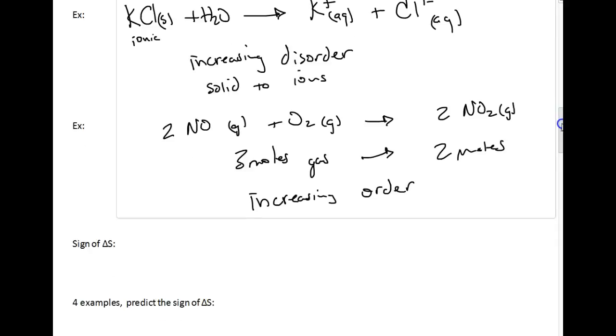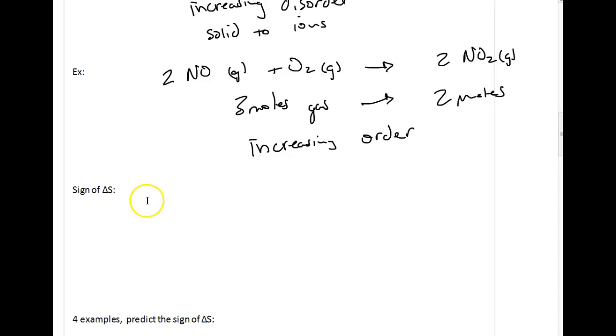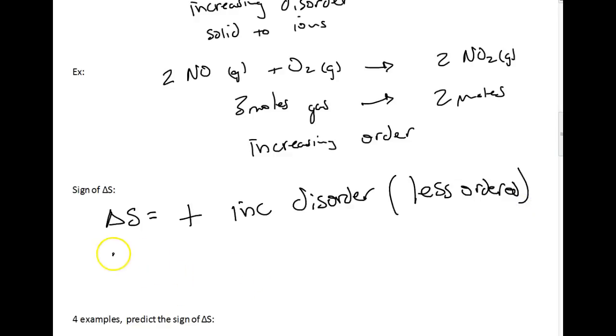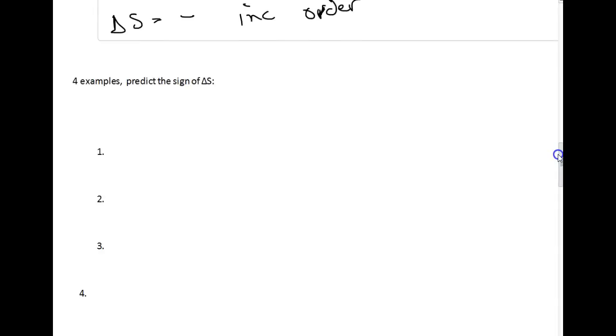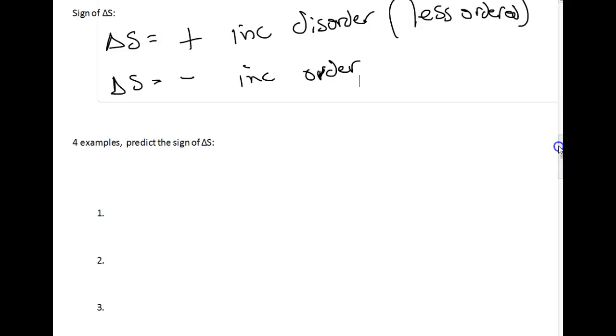What does this have to do with entropy and delta S? So let's talk about the signs of delta S. So if we have delta S, the sign of delta S, as positive, we would say that we are increasing disorder. We are becoming less ordered. And if we have a delta S sign that is negative, we are increasing order. So let's give you some examples of what we mean by this.